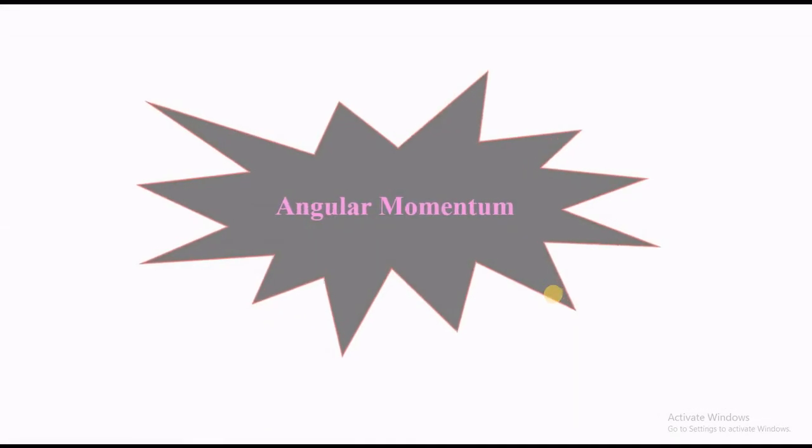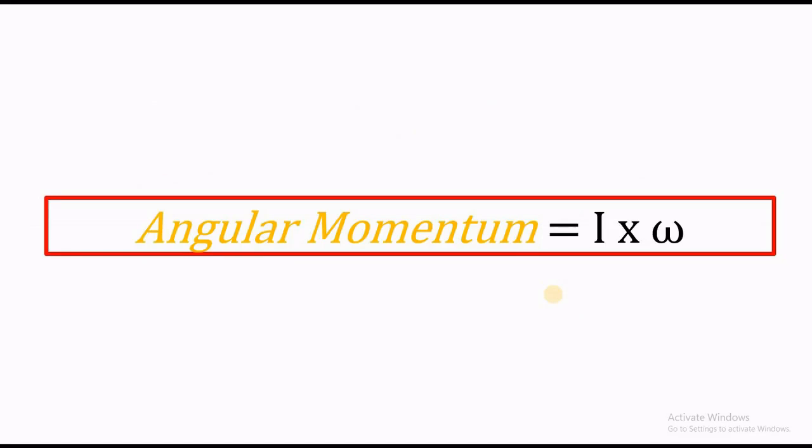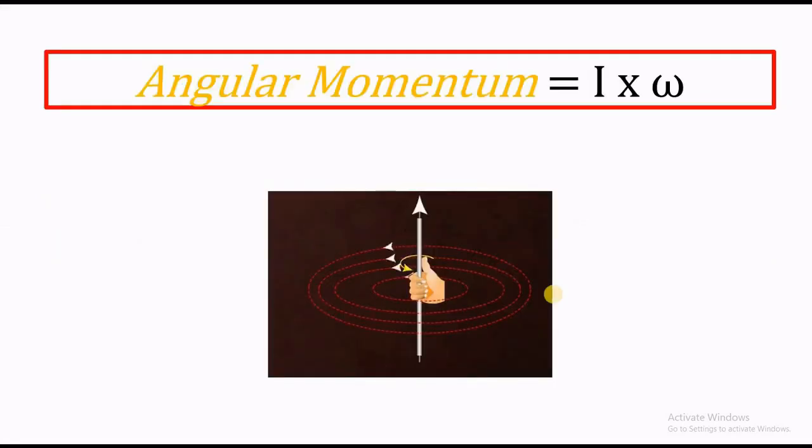If the mass of the rotating object is also considered, another term called angular momentum can be discussed. Angular momentum is given by the product of I and omega, where I is the moment of inertia of the object. Obviously, this is also a vector quantity, the direction of which can be determined using the right hand thumb rule.